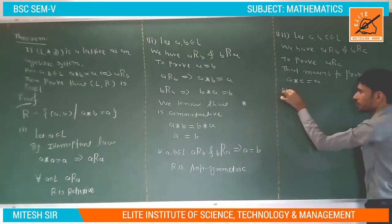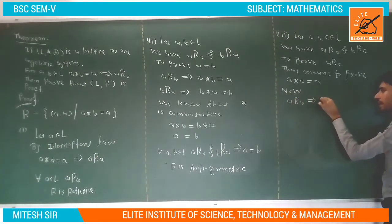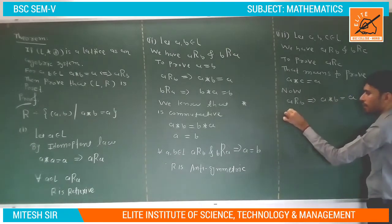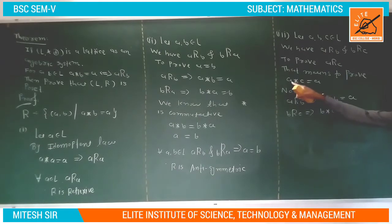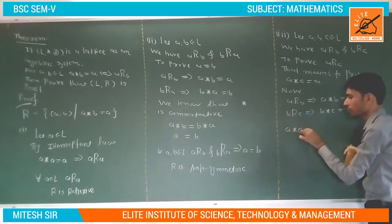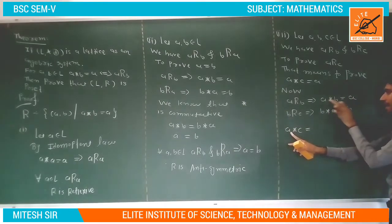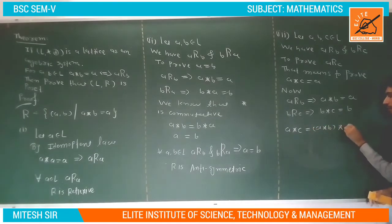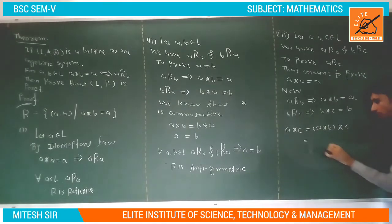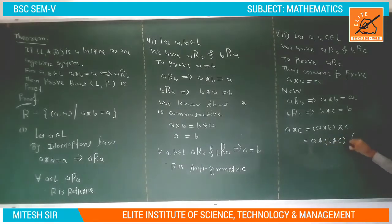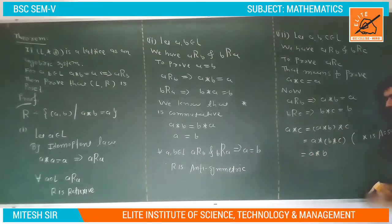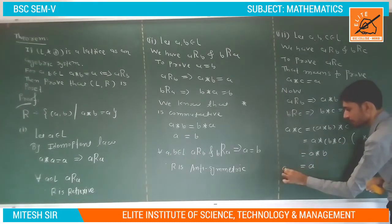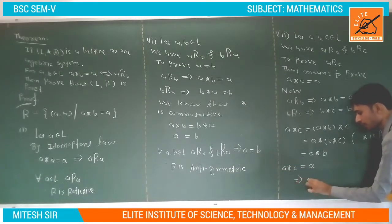a★c = a★c. Substitute a = a★b, so a★c = (a★b)★c. Since ★ is associative, this equals a★(b★c). The value of b★c is b, so this becomes a★b, which equals a. Therefore a★c = a, which means a related to c.